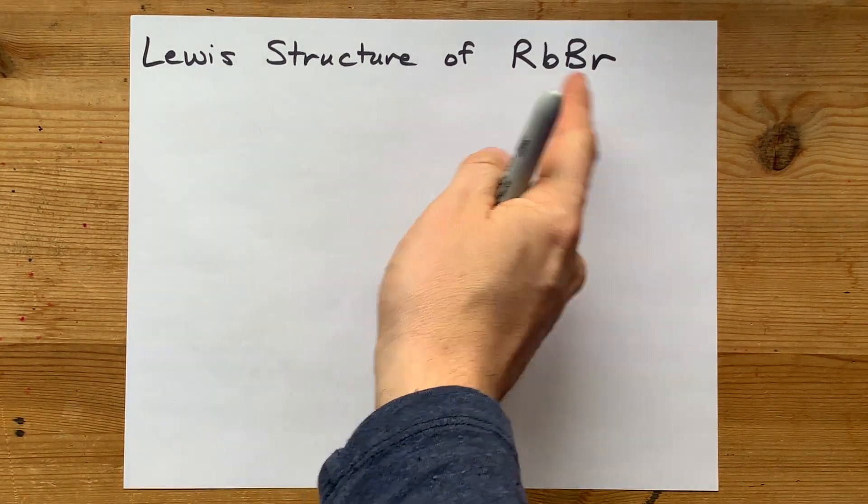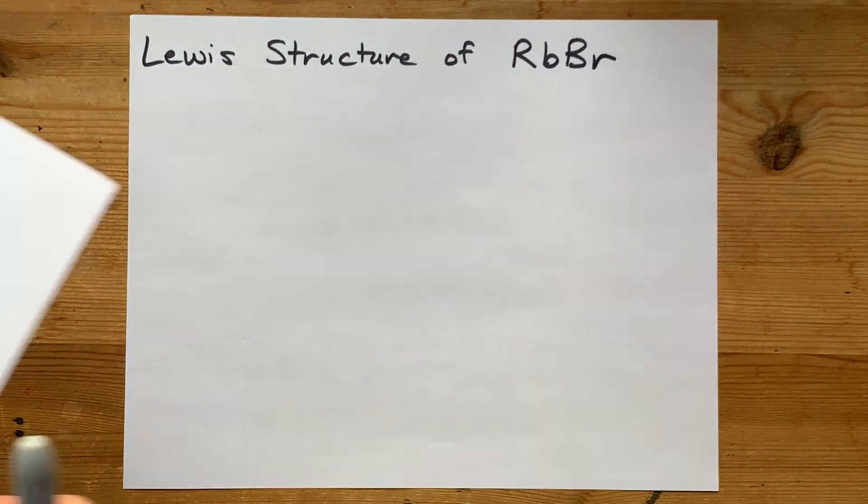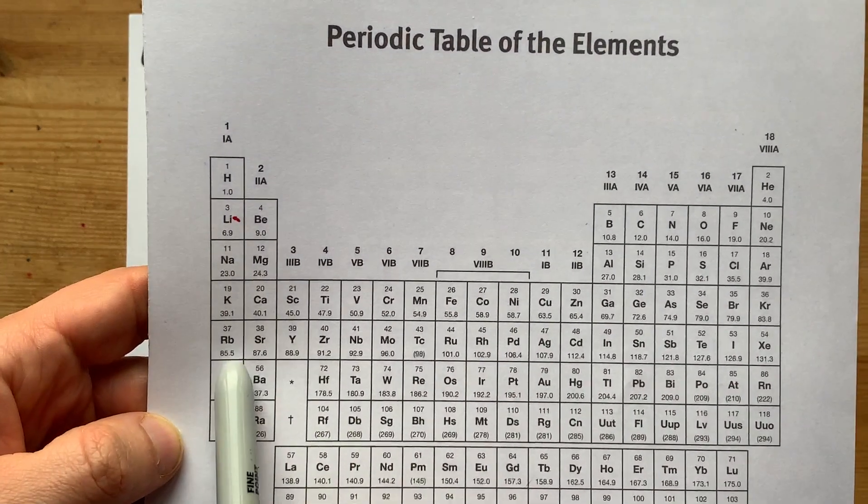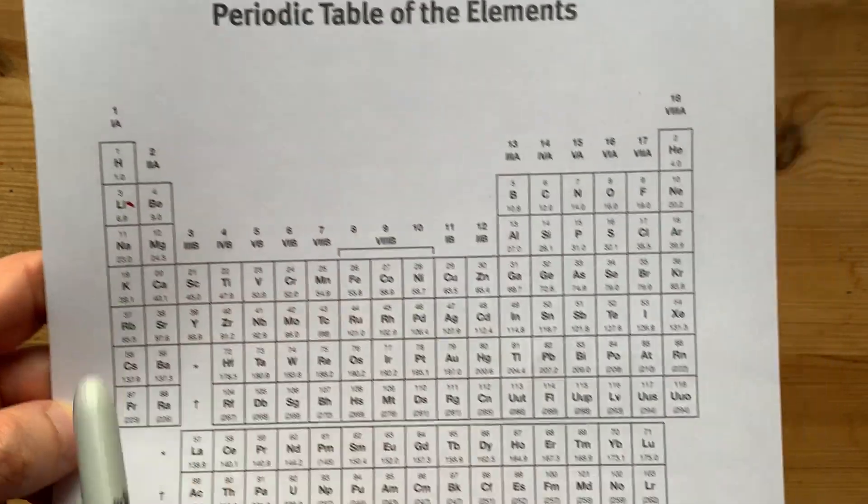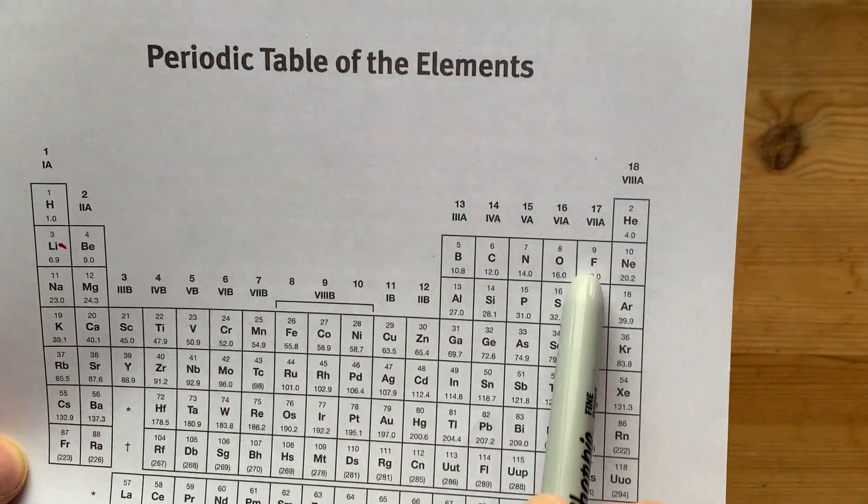I love rubidium bromide, RbBr. Here we have a metal, rubidium, bonding with a non-metal, bromine.